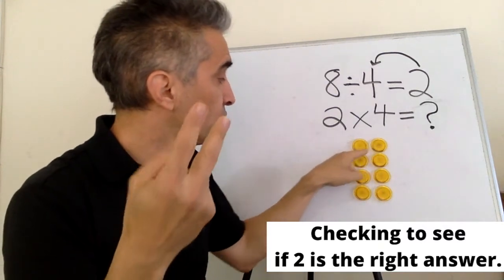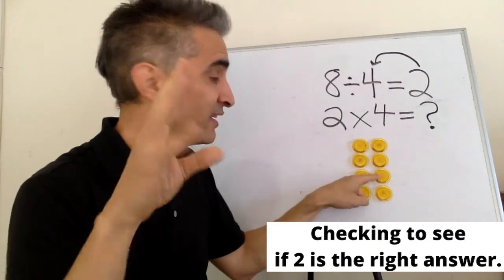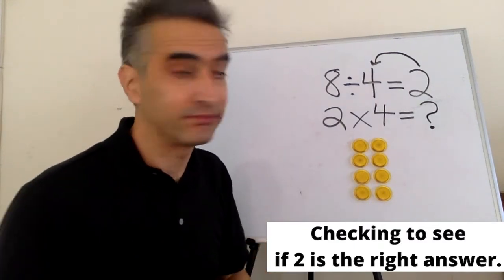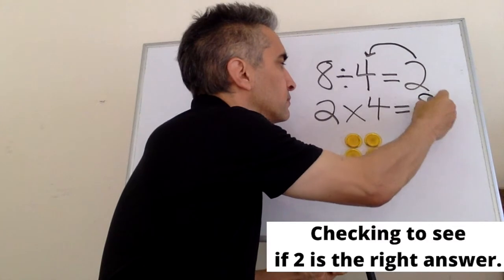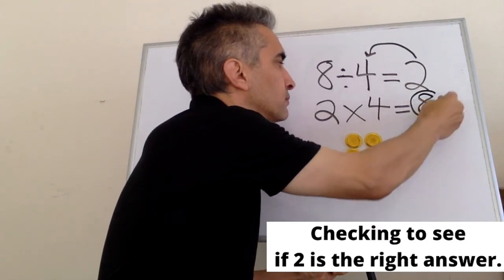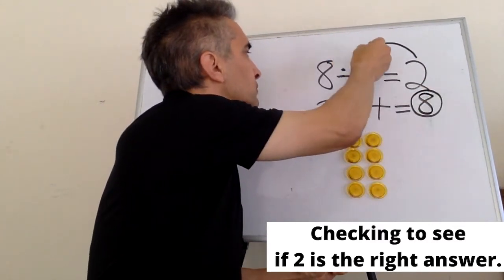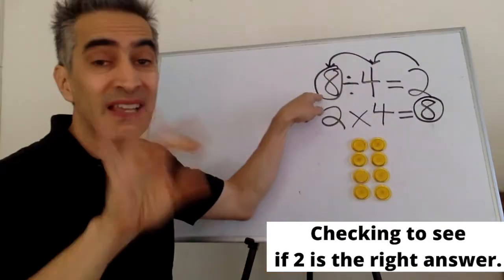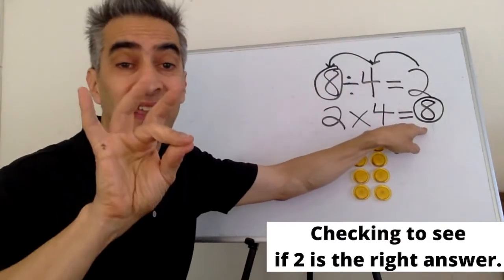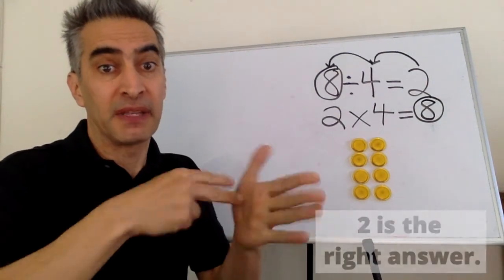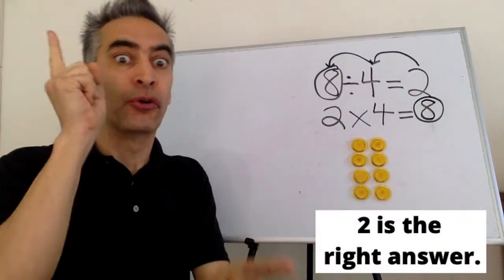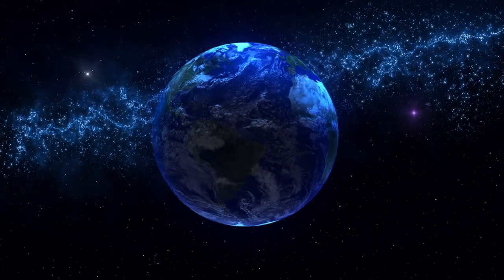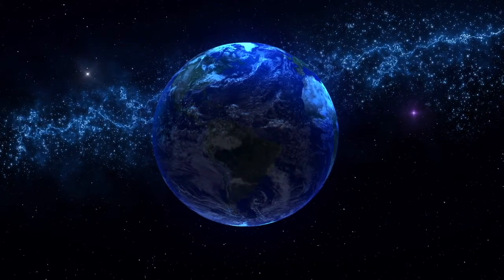One, two, three, four, five, six, seven, eight. This eight and this eight are the same number. That means the answer two is right.